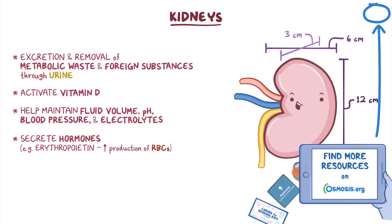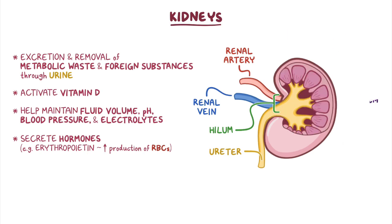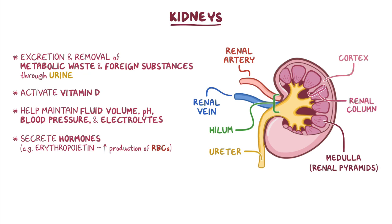The medial border of each kidney has a concave area called the hilum. This is where the ureter exits the kidney, and the renal artery, renal vein, and lymph vessels enter and exit the kidney. The functional tissue of the kidney, or parenchyma, has an outer renal cortex and inner renal medulla. The medulla is organized into cone-like structures called renal pyramids, and renal columns in between the pyramids, which are extensions of the renal cortex.